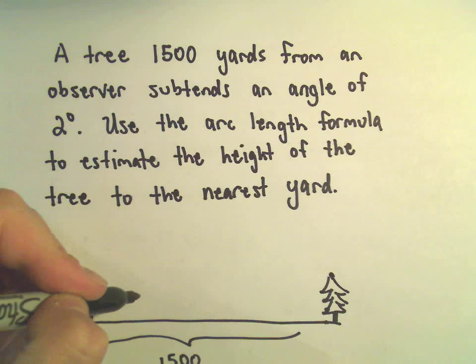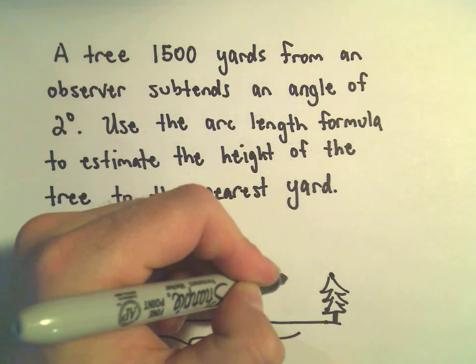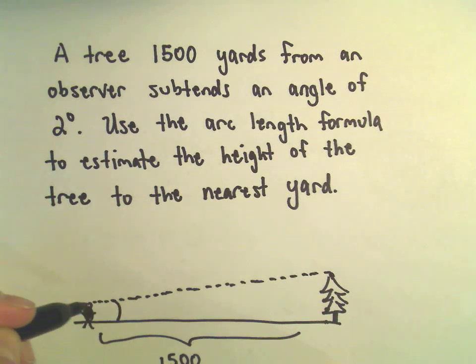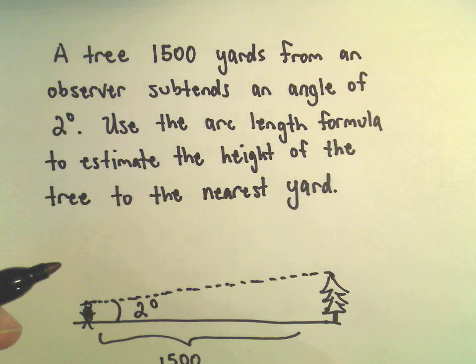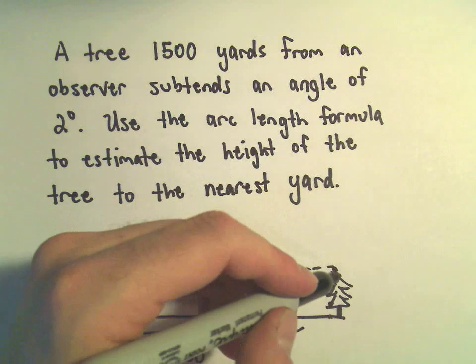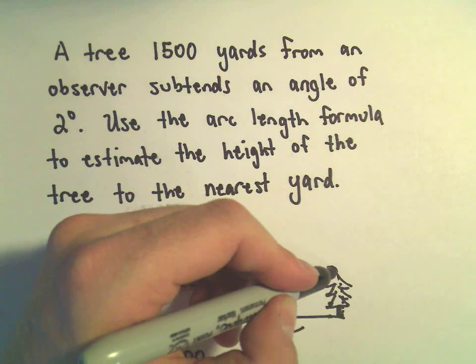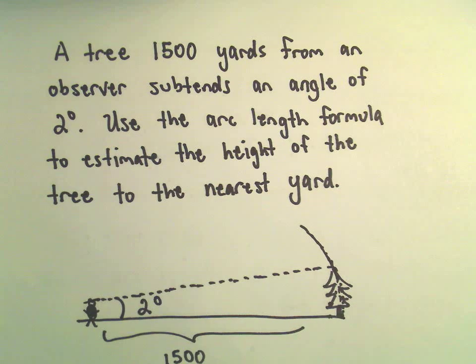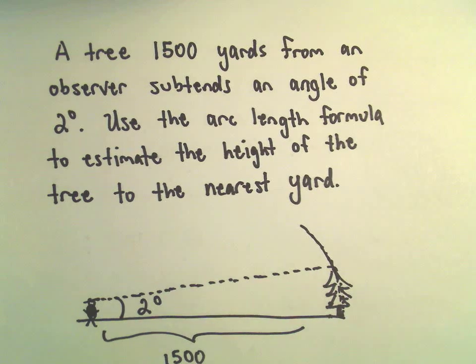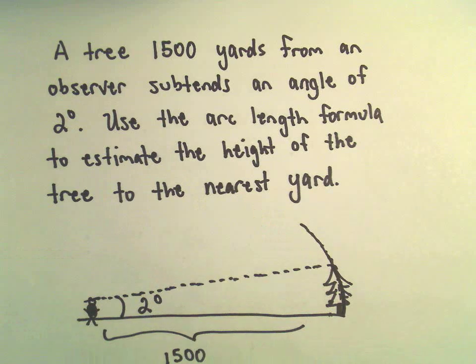And the idea is, to the top of the tree, you're going to make a little angle here of 2 degrees. The tree is standing straight up and down. The circle that you're really thinking about is definitely curved, so that's why we're approximating the height of the tree here. But if we can just find that arc length, that arc length is going to be approximately equal to the height of the tree.